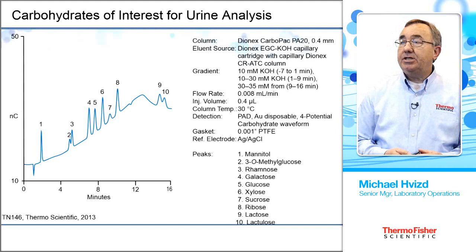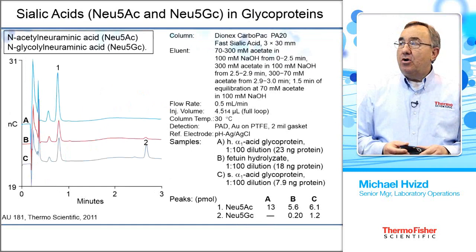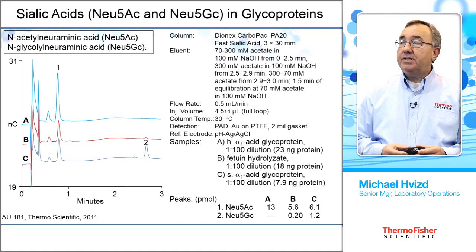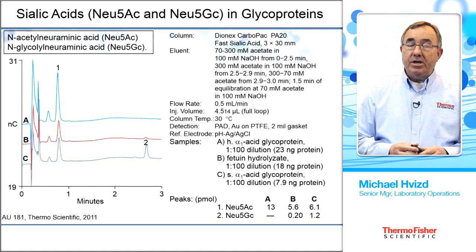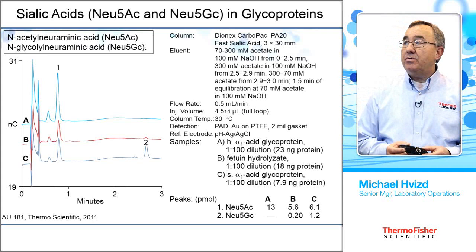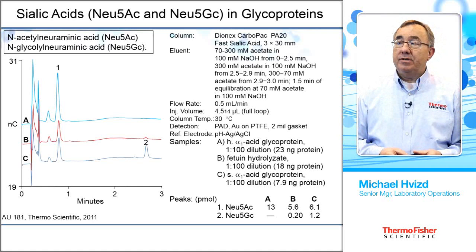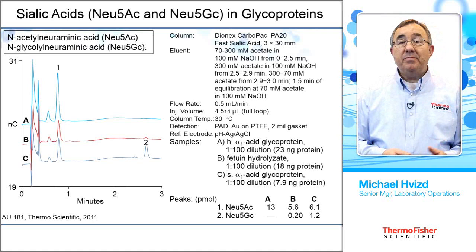The separation I'm showing now uses the new PA20 fast sialic acid column — notice it is only 30 millimeters in length, so the separation is done very quickly. We're using a sodium acetate/sodium hydroxide gradient, not the eluent generator module. This separation does N-acetylneuraminic acid as well as N-glycolylneuraminic acid and separates them by about a minute and a half. Total run time is only three minutes — much better than our 10-minute run shown earlier in the slide deck.